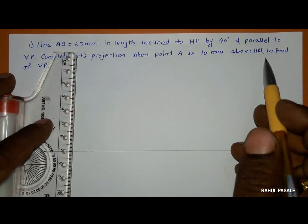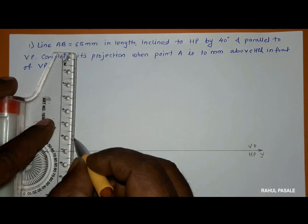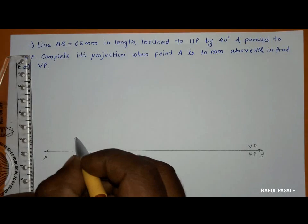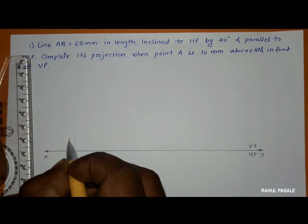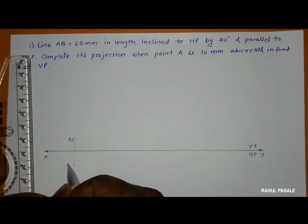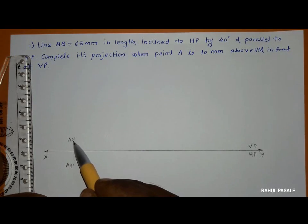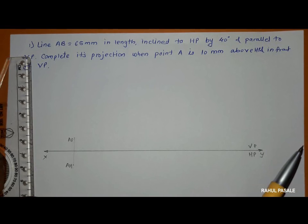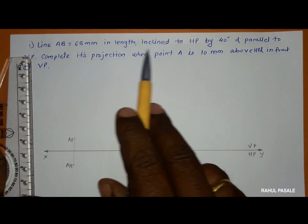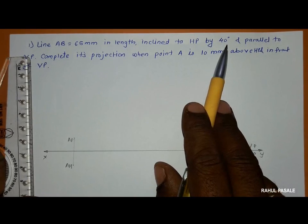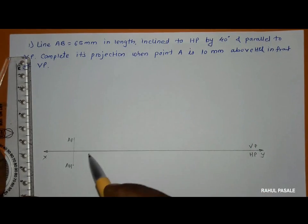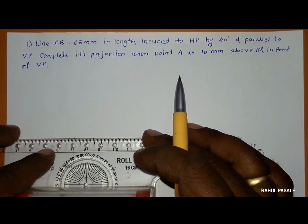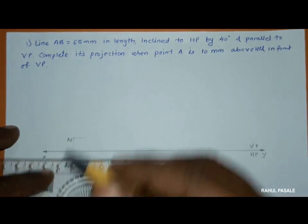Firstly we locate point A — 10 mm above HP and 10 mm below the XY line. We denote this point as AF and this point as AH, because AF is located in the VP (FRP) and AH is located in the HP (HRP). Now the inclination with the HP is given as 45 degrees, so we mark that inclination angle in the front view by drawing a short line.